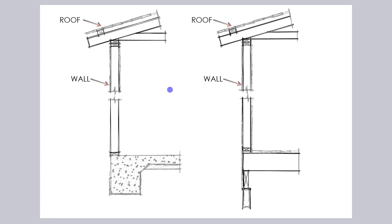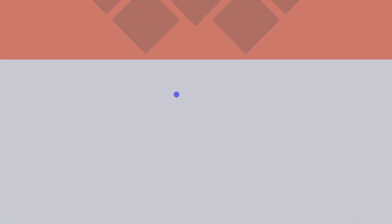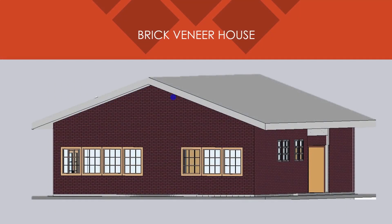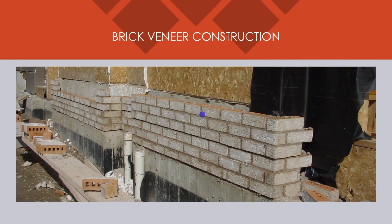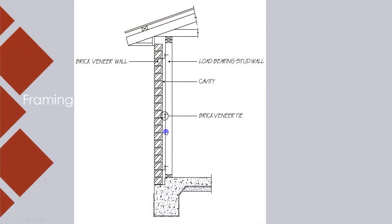The second typical construction method is brick veneer. The walls for this method of construction consist of a brick facade fixed to a timber frame on the inside. The layer of brick is fixed to the timber frame with brick ties regularly spaced. There is a cavity of typically 40 millimeters between the frame and the brick wall, which acts as a moisture barrier and provides insulating properties.